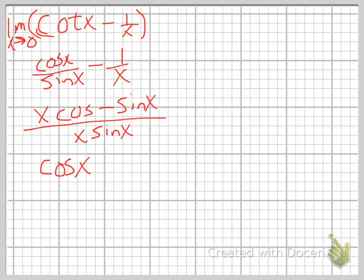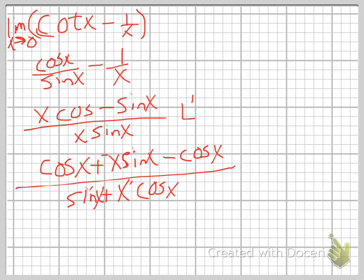Now we can apply L'Hôpital's rule, so we're going to use the product rule. We end up with cosine of x plus a negative x sine of x minus cosine of x, and you'll notice that the cosine of x minus cosine of x on the numerator cancels out, and so you're left with this.